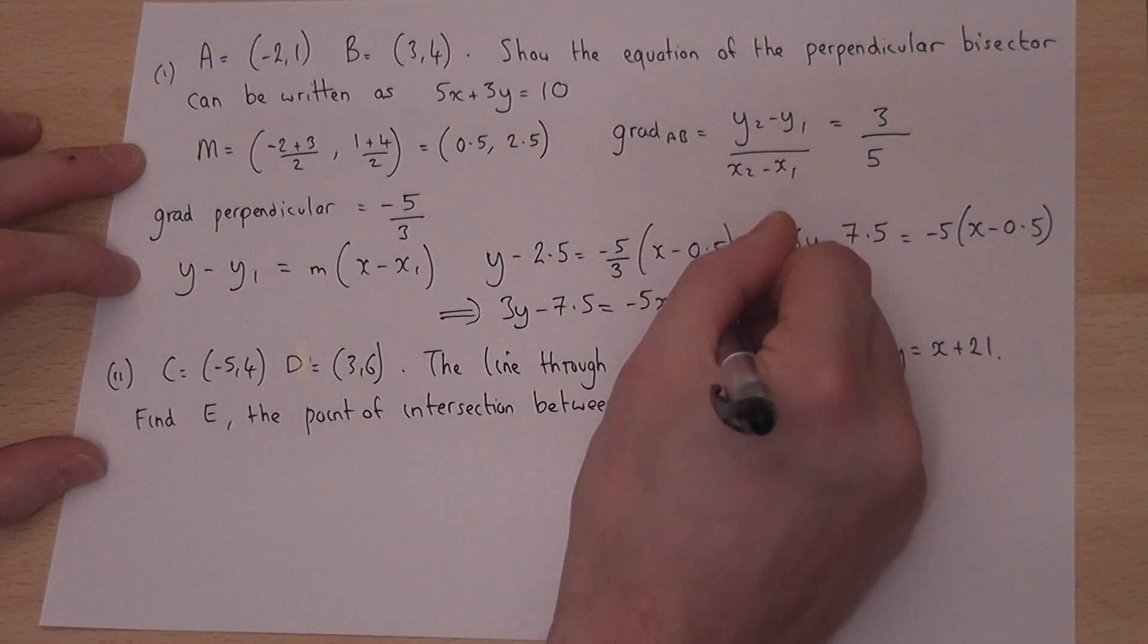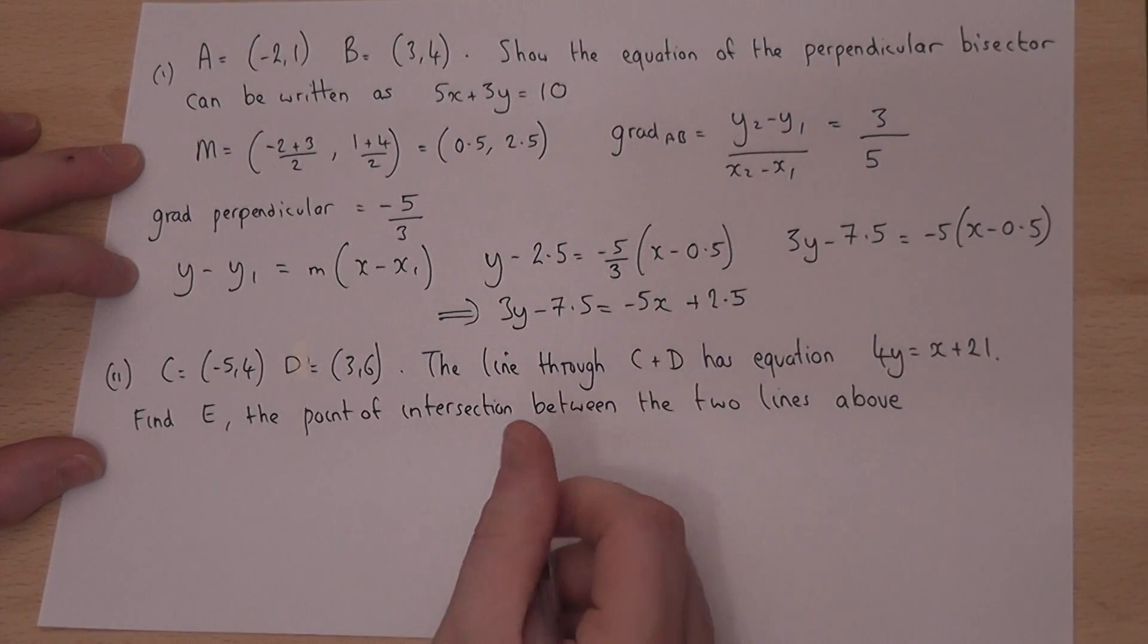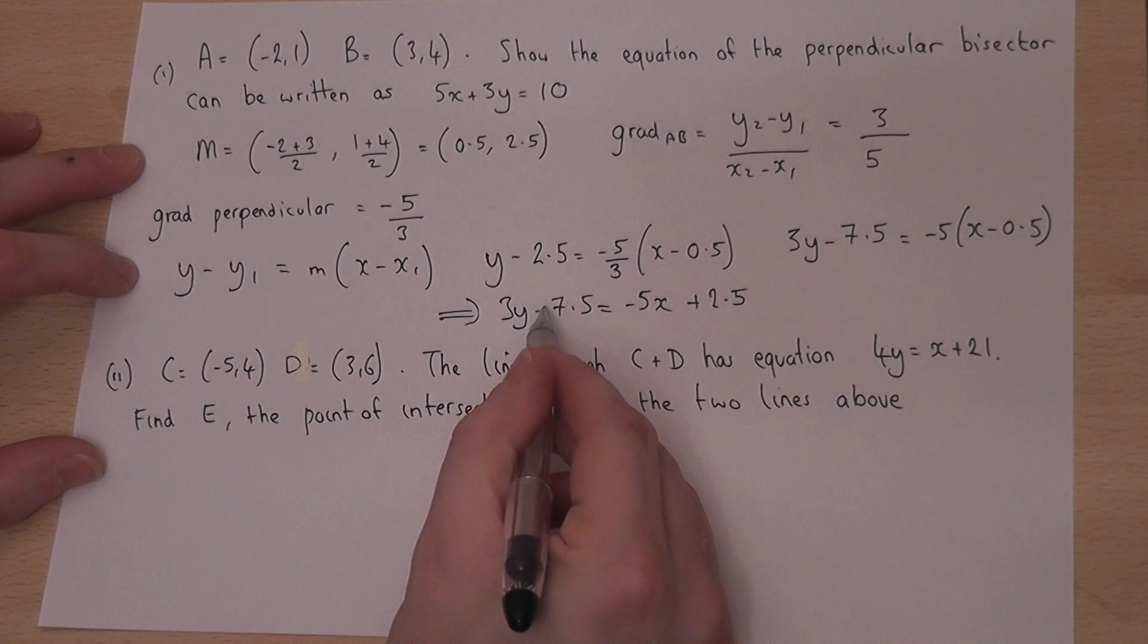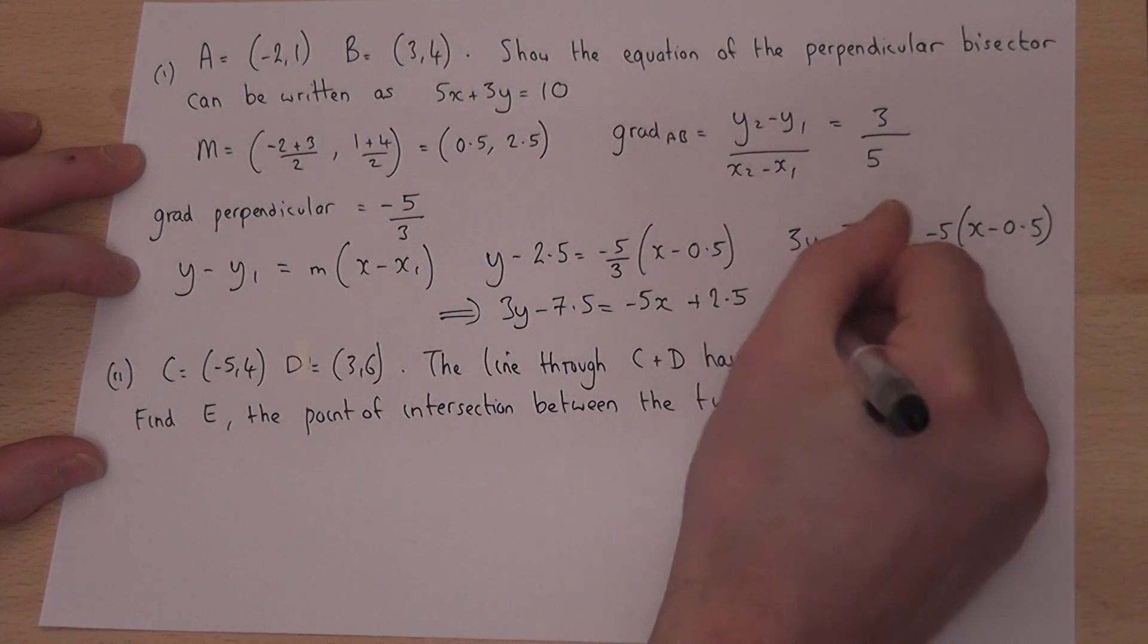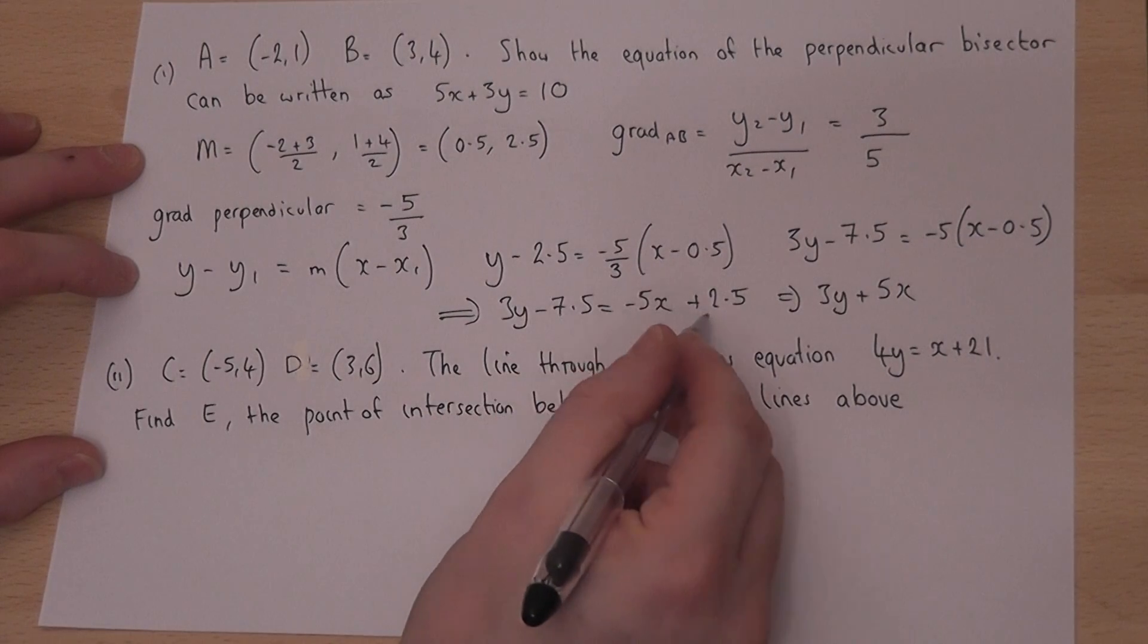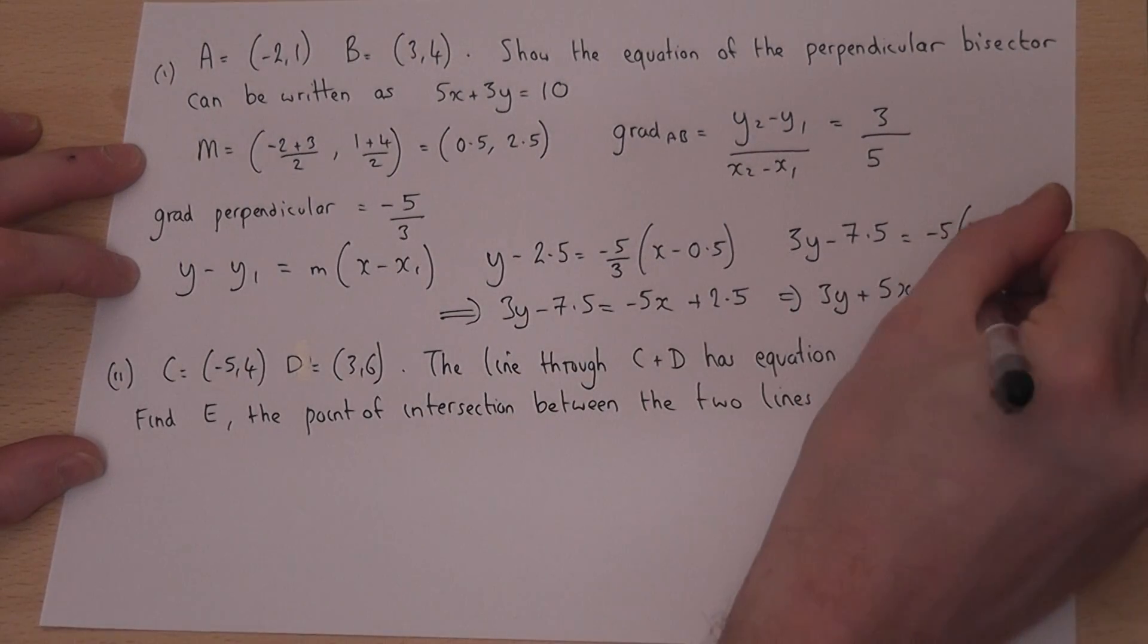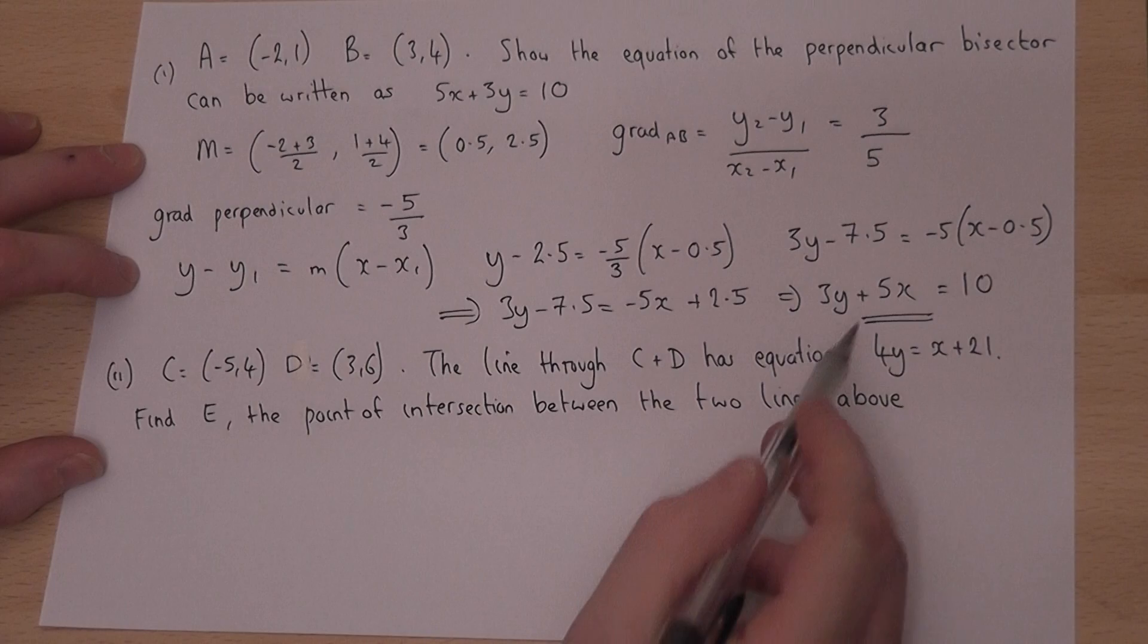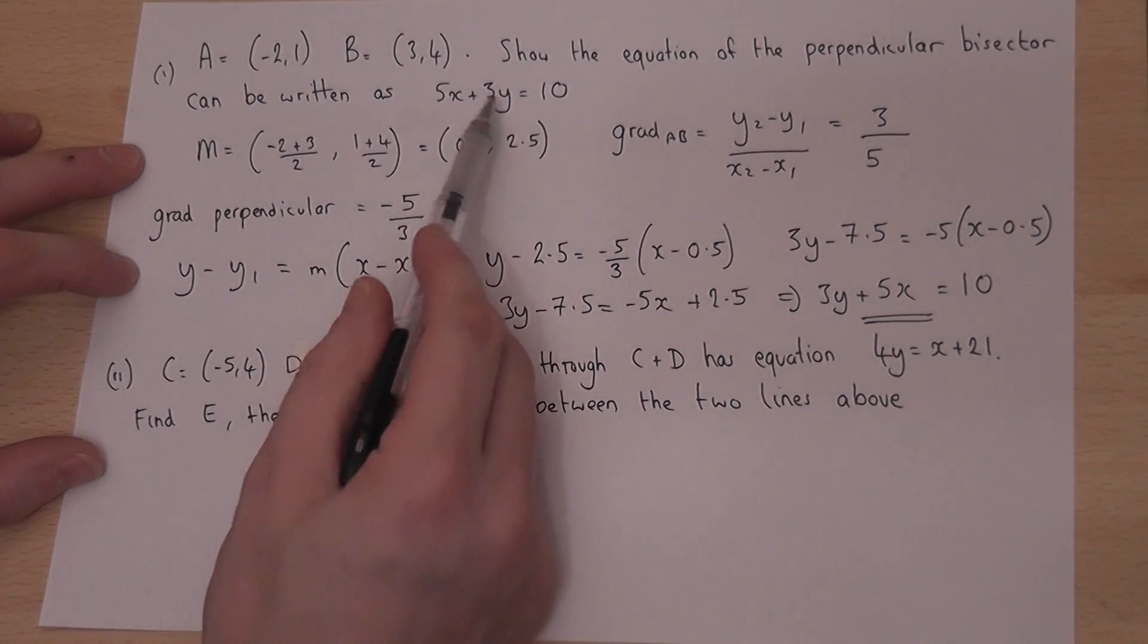If I now add 5x to the left, I get 3y plus 5x. If I add the 7.5, I get equal to 10. So I've therefore shown the result as required in the question.